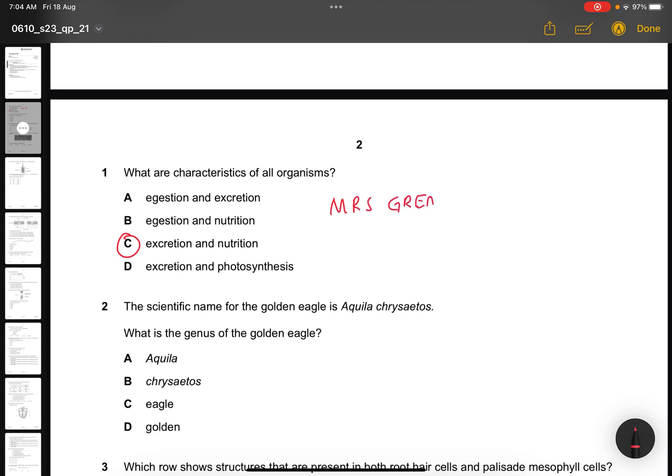Part 2. The scientific name for a golden eagle is Aquila chrysaetos. What is the genus of the golden eagle? The genus is usually the capital letter, so it will be Aquila.